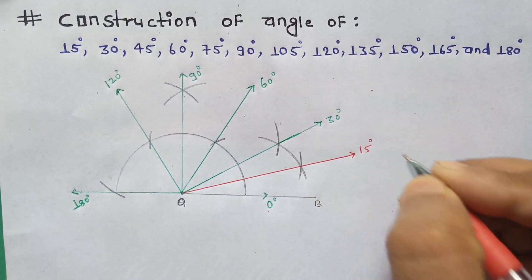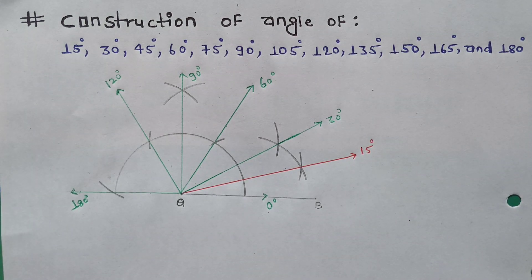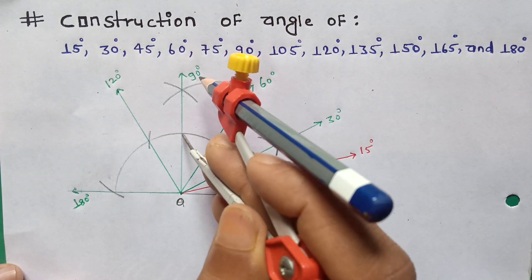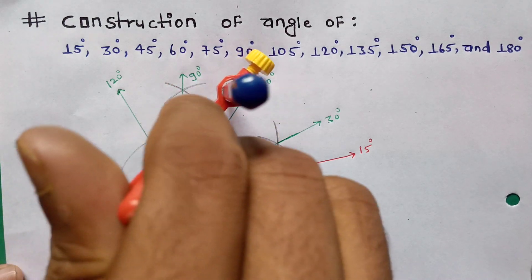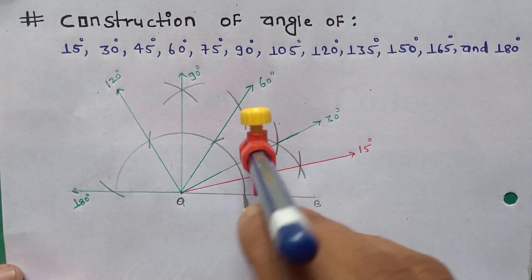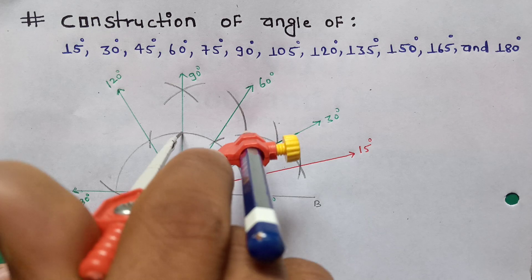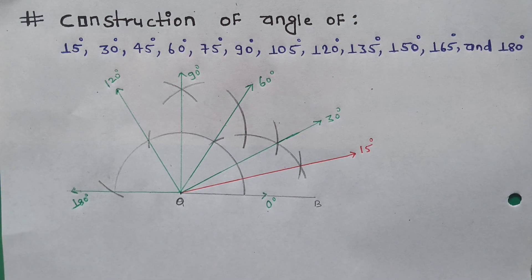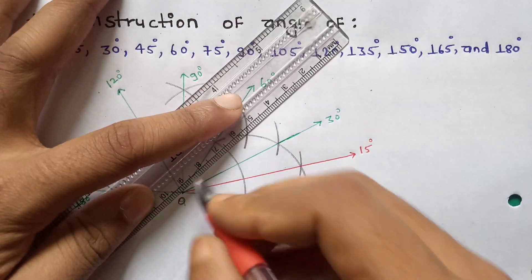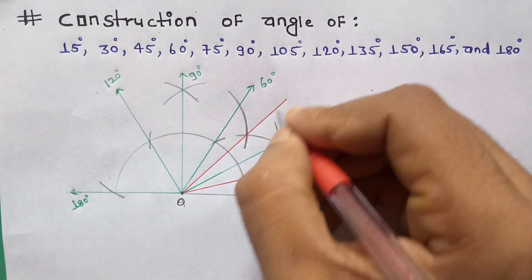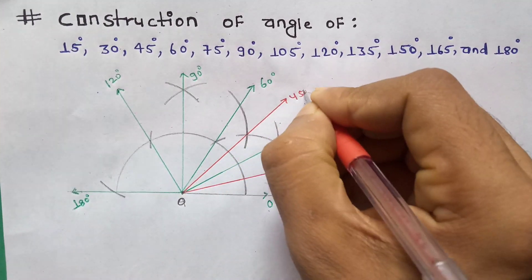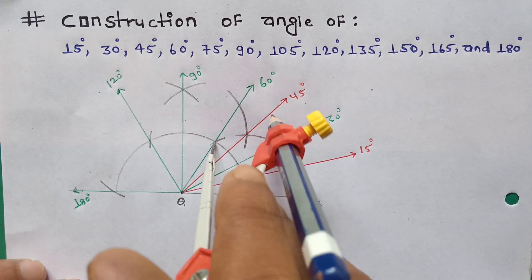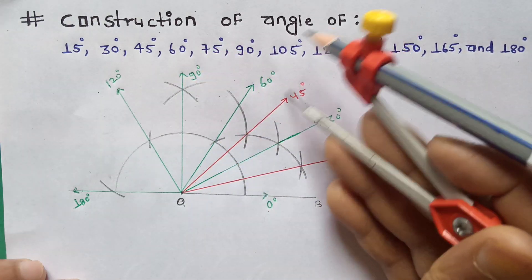If we need 45 degrees, the mid value of 90 is 45. So from point 90 we can draw and from point 0 we can draw — from 90 and 0 we can draw 45 degrees. Here is the cutting point, so it will be 45 degrees. Draw a line — the angle is 45 degrees. You can also cut from 60 degrees and 30 degrees to get 45 degrees.